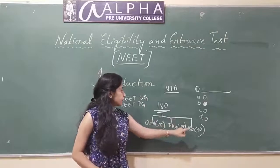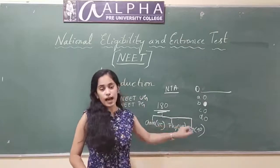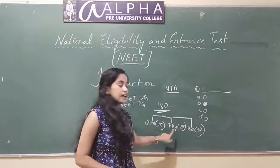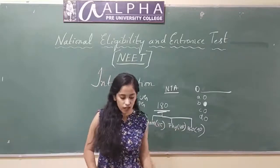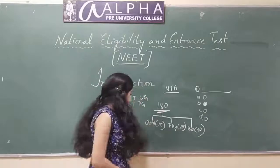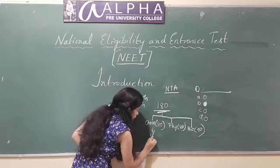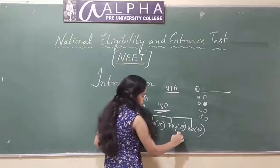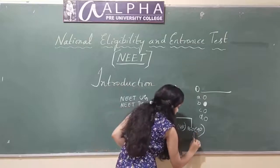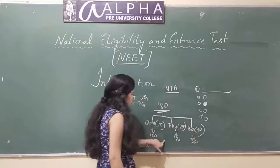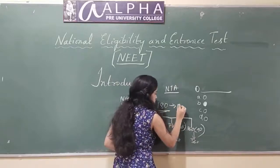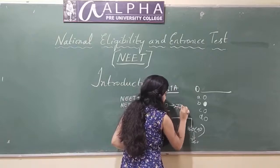50% of your NEET questions are from biology and the remaining 50% includes chemistry and physics. One question consists of 4 marks — so chemistry 45 questions for 180 marks, physics 45 questions for 180 marks, and biology 90 questions for 360 marks, totalling 720 marks.